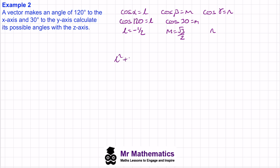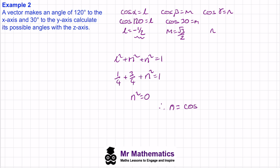Using L² + M² + N² = 1: substituting L = −1/2 gives (−1/2)² = 1/4, and M = √3/2 gives (√3/2)² = 3/4. So 1/4 + 3/4 + N² = 1, which means N² = 0, so N = cos gamma = 0. Taking the arc cosine of both sides, gamma equals 90 degrees or 270 degrees.